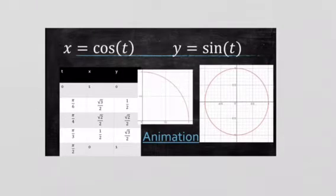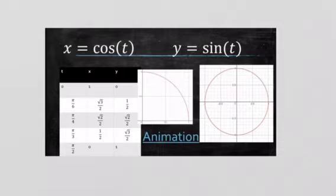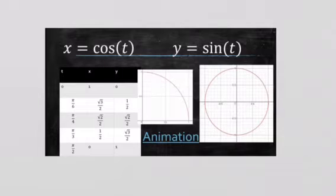The table first asks you to determine X and Y at these different inputs, which is a throwback to unit 7 and unit 8 — you need to know what cosine of pi over 6 is and what sine of pi over 6 is. Eventually you have to start remembering these values somehow.